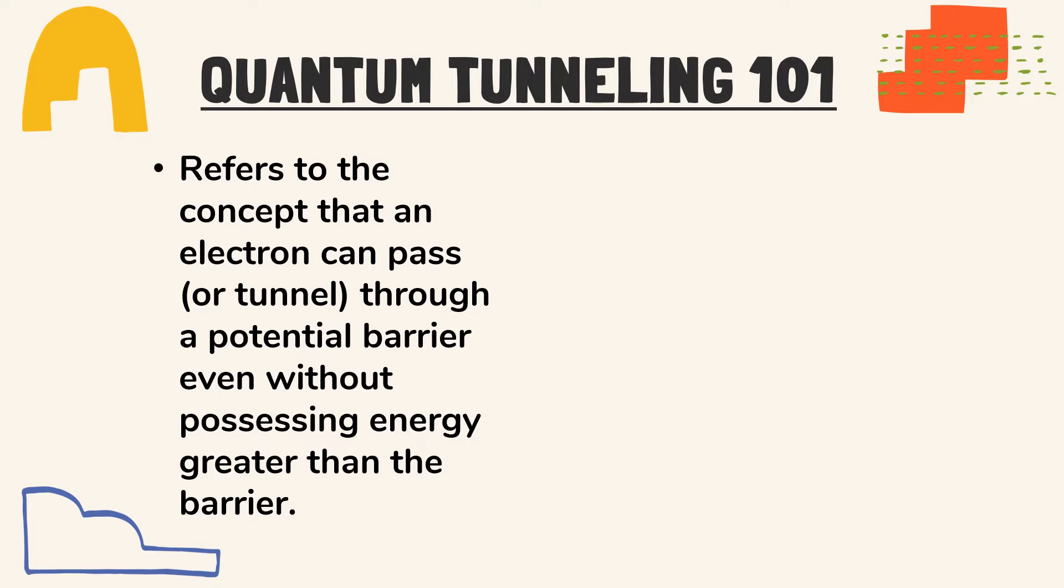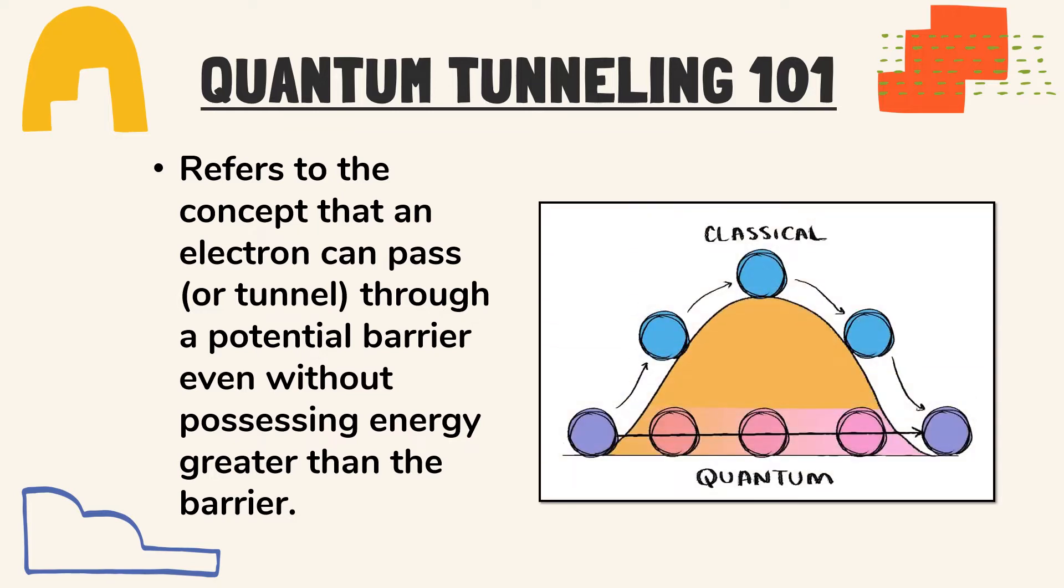Now in terms of classical physics, we can explain this concept using kinetic energy and potential energy. Suppose that a ball is to be rolled over a hill, and in classical physics, the ball must possess energy greater than the potential energy barrier provided by the hill.